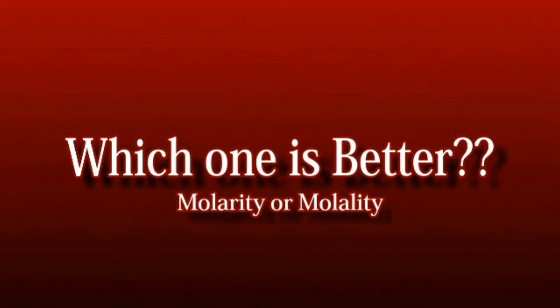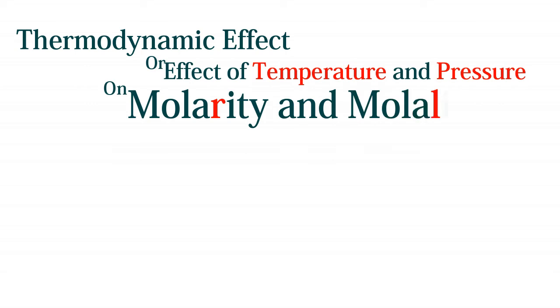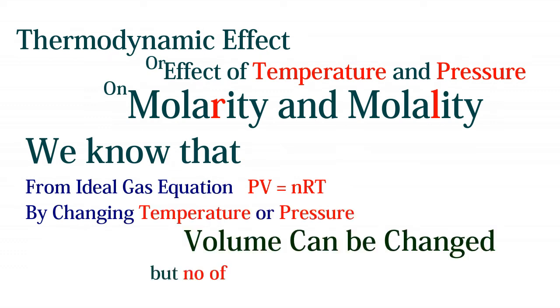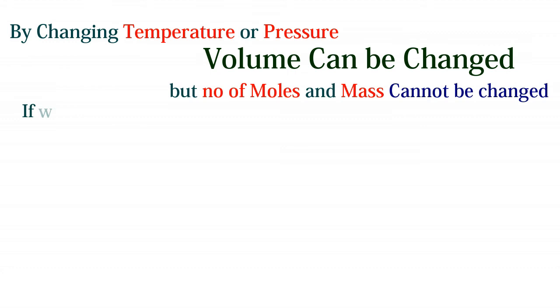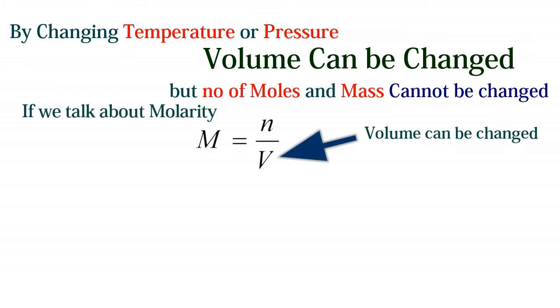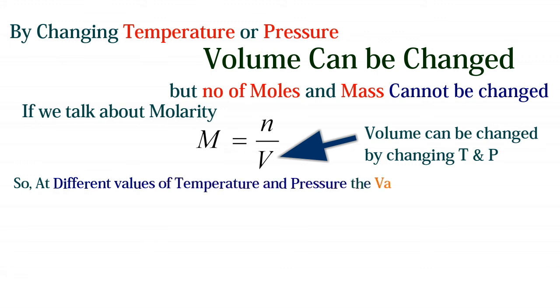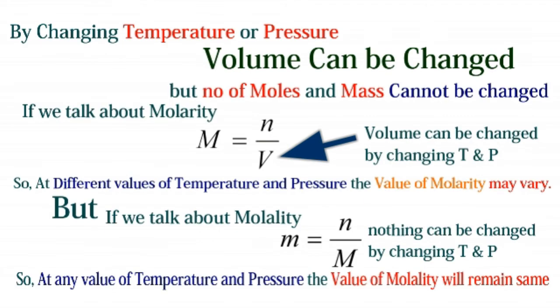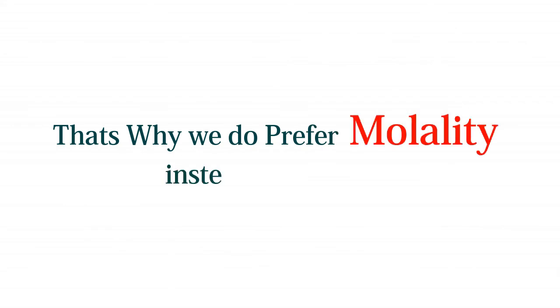Which one is better — molarity or molality? Thermodynamic effects refer to the effect of temperature and pressure. From the ideal gas equation PV = nRT, changing temperature or pressure can change volume, but not the number of moles or mass. Molarity depends on volume, so its value may vary with temperature and pressure. Molality, however, is unaffected by temperature or pressure changes, so its value remains the same. That is why molality is preferred over molarity.